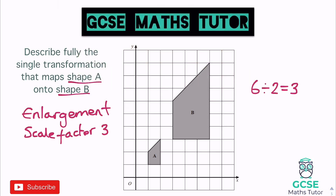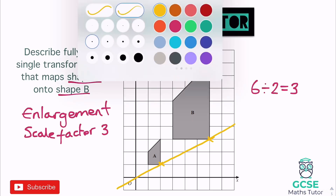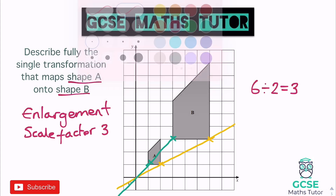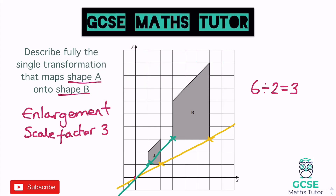To find the center of enlargement you need a ruler and pencil. Pick corresponding points on both shapes — I'll go to the bottom right corner on each — and join those up, extending the line through the graph. Then pick another pair — the bottom left corners — and join those up too. The two lines will cross at the center of enlargement, which is down here.